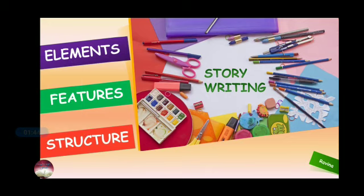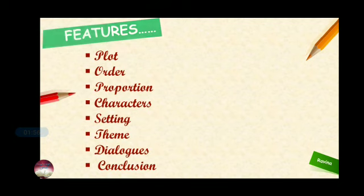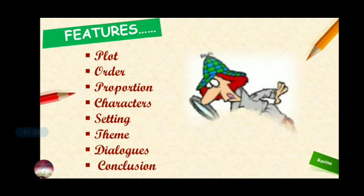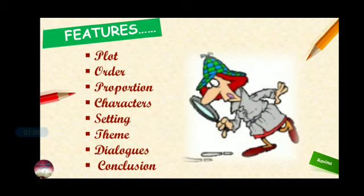Now I am going to tell you the elements of story writing — you may say features, or the structure of story writing. Features of a good story: a good story has a beginning, middle, and end, which comes under plot. So features of story writing include plot, order, proportion, characters, setting, theme, dialogues, and conclusion. Don't forget to give a suitable title to your story.